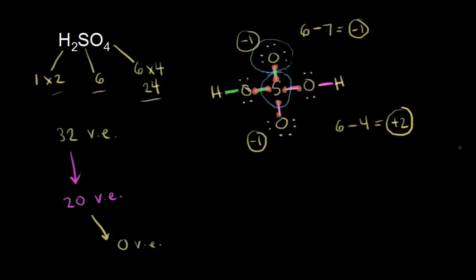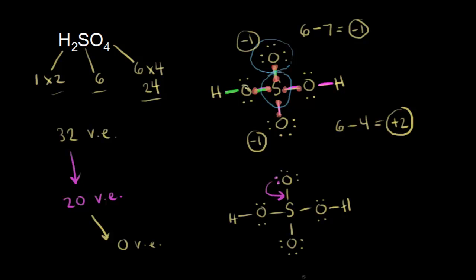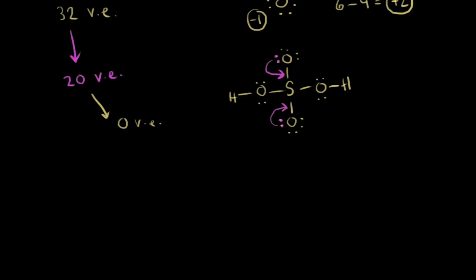Molecules prefer to minimize formal charge, so we want to get these formal charges as close to zero as possible — that would be the preferred dot structure. We can't add more electrons since all 32 valence electrons are already represented. The only thing we can do is share more electrons. If we take two electrons from the top oxygen and move them to form a double bond, and take two electrons from the bottom oxygen and form another double bond, let's see what the new dot structure looks like.